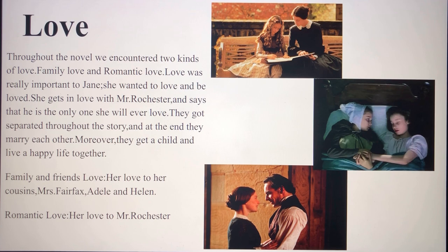Love: we encounter two kinds of love — family love and romantic love. Love was really important to Jane; she wanted to love and be loved. She falls in love with Mr. Rochester and says he is the only one she will ever love. They get separated throughout the story and at the end marry each other. Family love includes her love for her cousins, Mrs. Fairfax, Adele, and Helen Burns. Jane always said in the novel she wanted to love and be loved — she wanted that exchange, which she never had growing up.